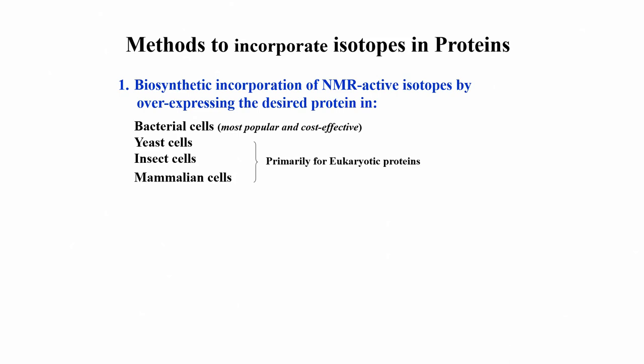There is another approach where we do not actually need the cells at all. When you grow cells you have to supply nutrients, monitor growth, harvest the cells, and then extract and purify the protein. That is the cell-based approach using bacteria, yeast, or mammalian cells. But there is another approach called cell-free synthesis, in which we do not need any organism. The idea is that whatever is needed to make a protein inside a cell can be taken outside the cell and mixed with chemicals to get the protein synthesized in isotope-labeled form.